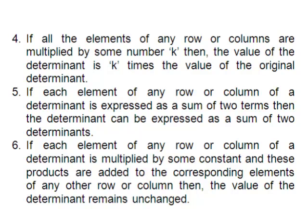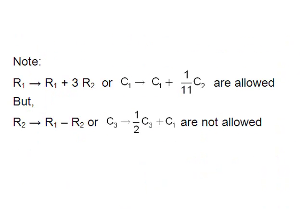Property 5: If each element of any row or column of a determinant is expressed as a sum of two terms. Property 6: If each element of any row or column of a determinant is multiplied by some constant and these products are added to the corresponding elements of any other row or column, then the value of the determinant remains unchanged. For example, transformations like R1 → R1 + 3R2 or C1 → C1 + (1/11)C2 are allowed, but transformations like R2 → R1 minus R2 or C3 → (1/2)C3 + C1 are not allowed.